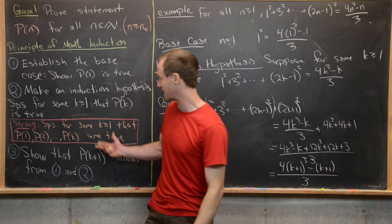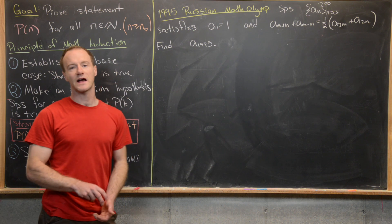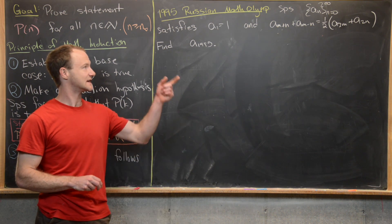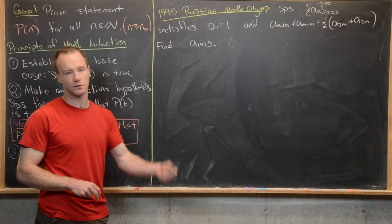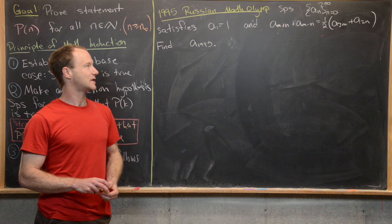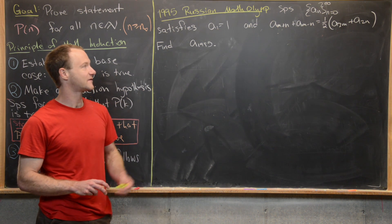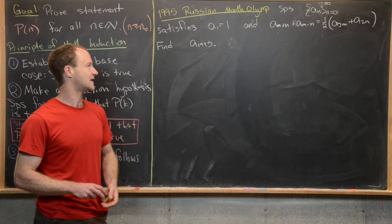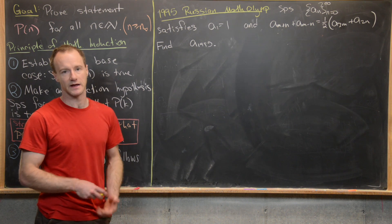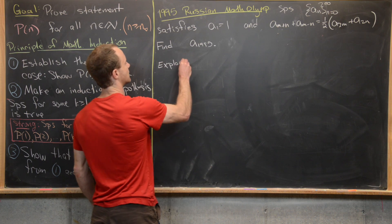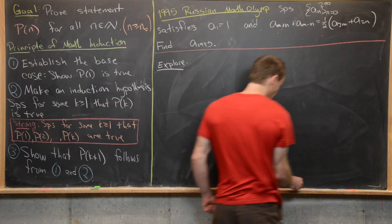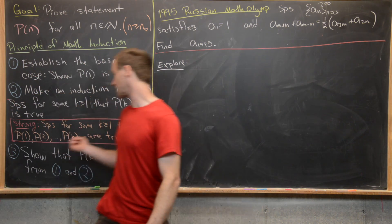Now we'll look at an example proved with strong induction. This is a problem from the 1995 Russian Math Olympiad. We have a sequence a_n (n from 0 to ∞) satisfying: a_1 = 1, and a_{m+n} + a_{m−n} = ½(a_{2m} + a_{2n}). Our goal is to find a_{1995}, and in fact we'll find a closed formula for a_n by first exploring the recurrence to make a conjecture.